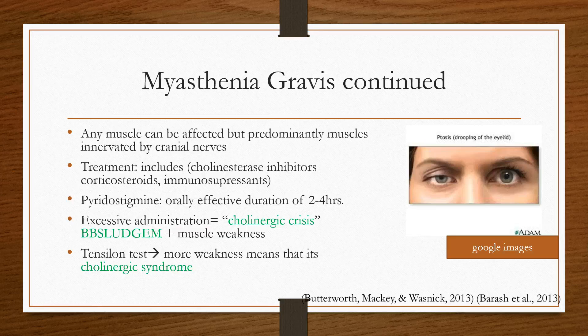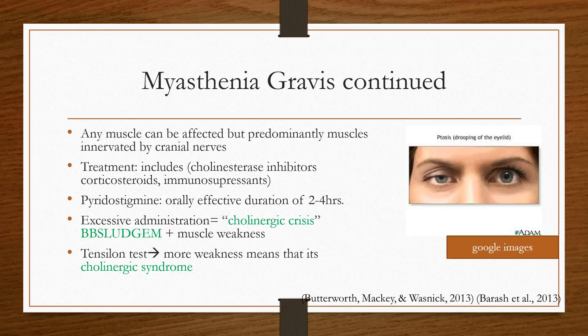Any muscle can be affected, predominantly muscles innervated by cranial nerves — that's why you have pulbar involvement of the larynx and pharynx. It's treated with immunosuppressants, cholinesterase inhibitors, and corticosteroids. Pyridostigmine is the mainline treatment; its duration orally is two to four hours. One of the things that can happen with any anti-cholinesterase drug is a cholinergic crisis.